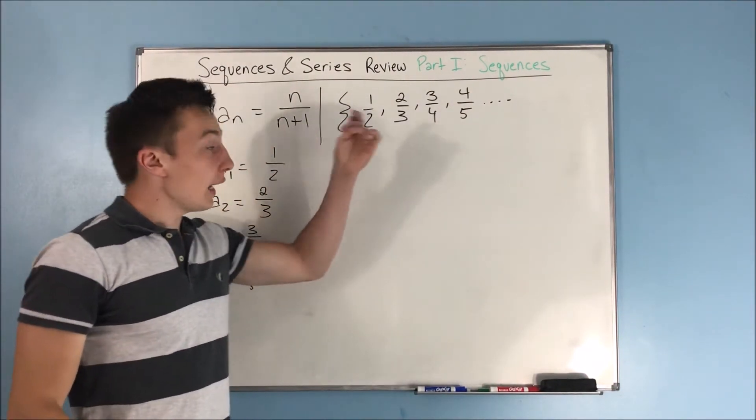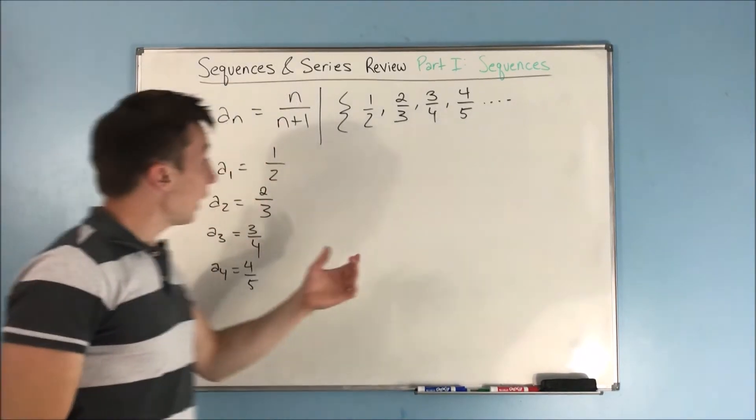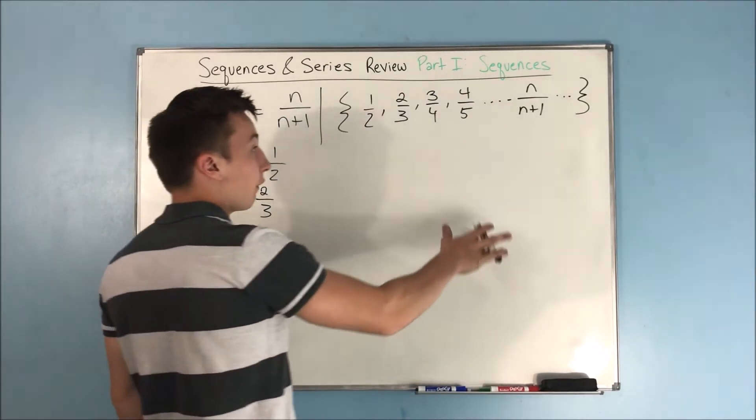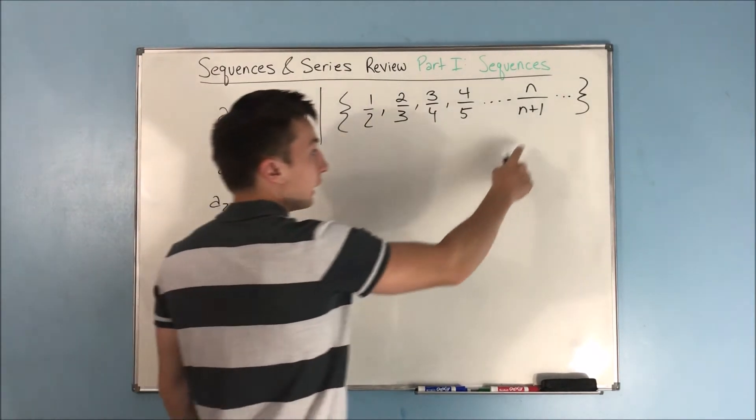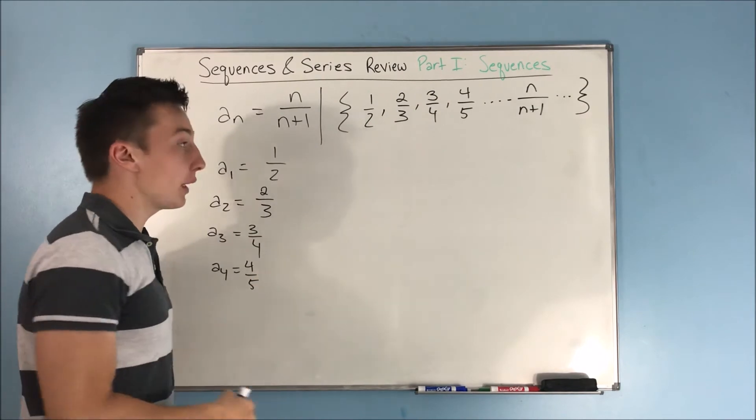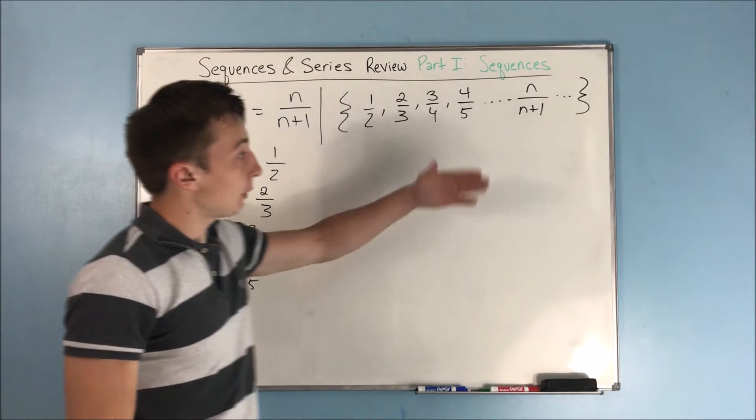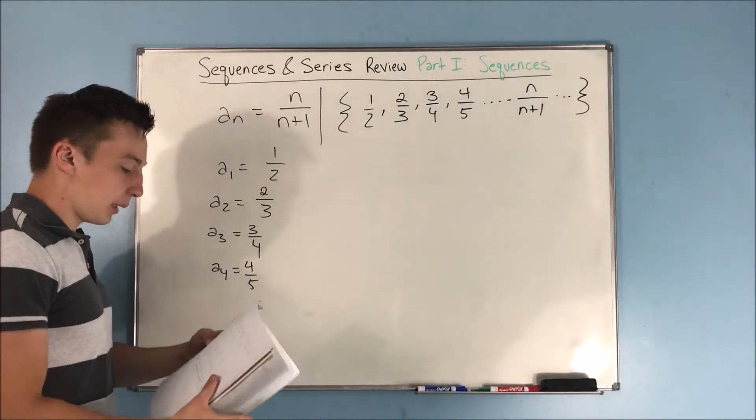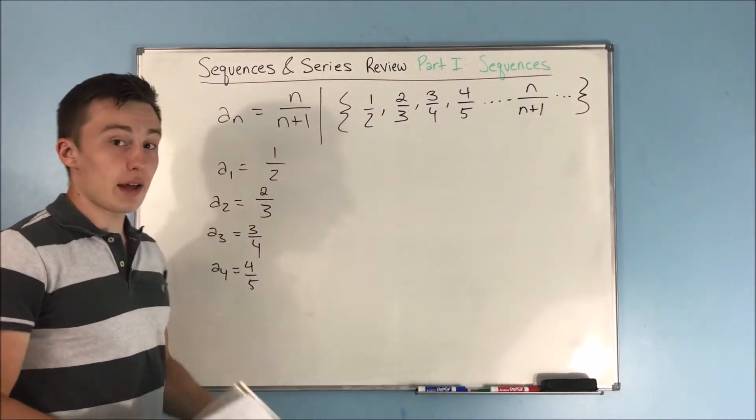You can see this kind of pattern where your numerator is just going up by 1, and your denominator is 1 more than that. So a sub 3 is going to equal 3 over 4, a sub 4 is going to equal 4 over 5, and so on. Remember, our a sub n here is n over n plus 1. So, say we wanted to find the 7th term or something like that. We can just plug in a 7 for n here and figure out what that 7th term is going to be. We would get 7 over 8, and that's going to be our a sub 7.